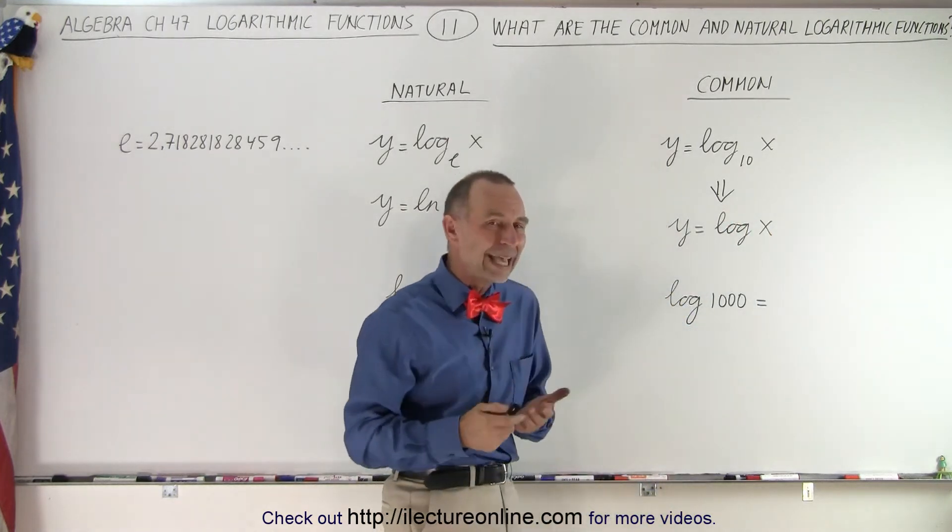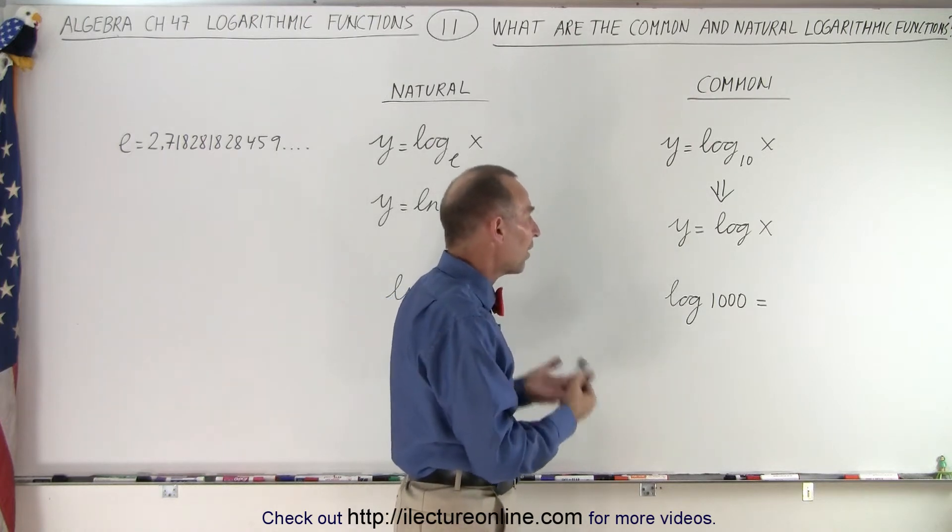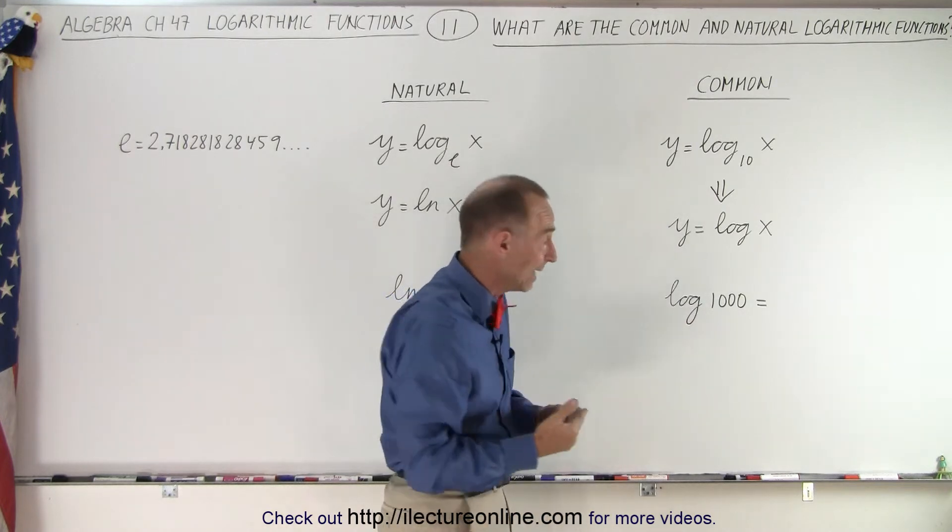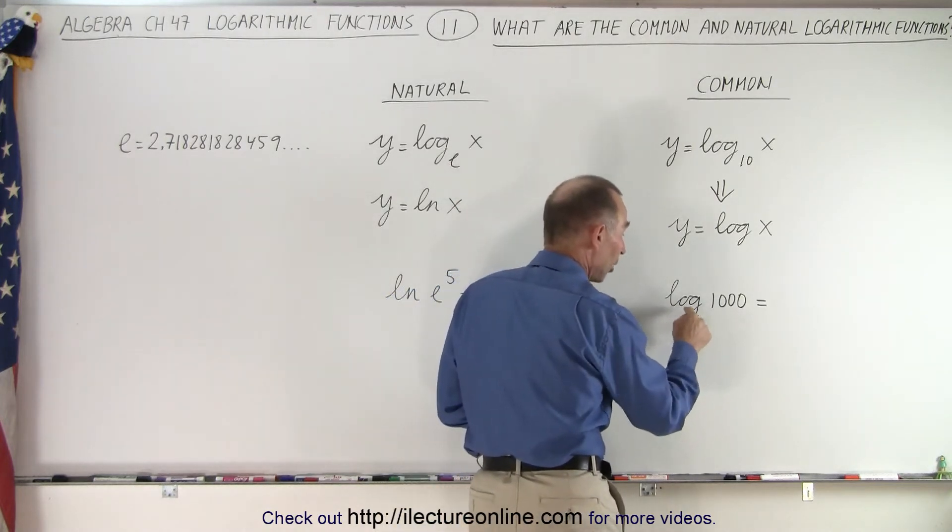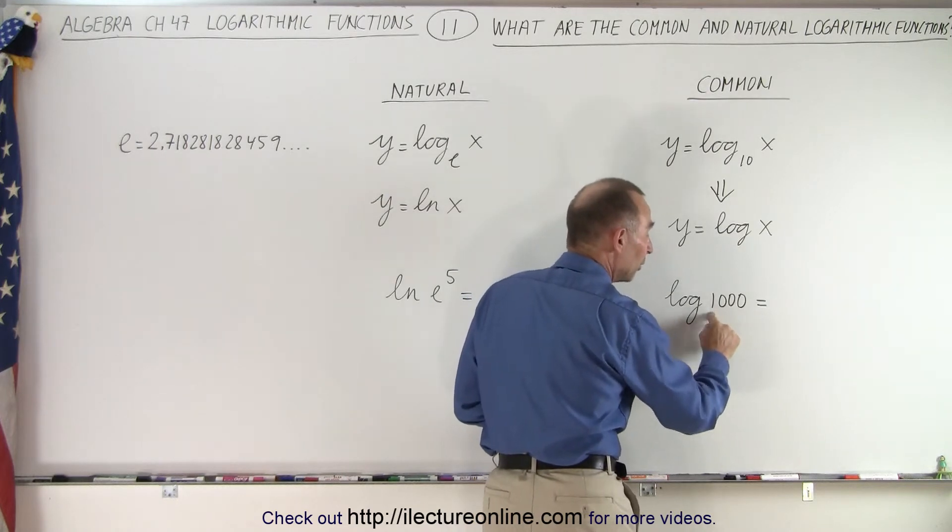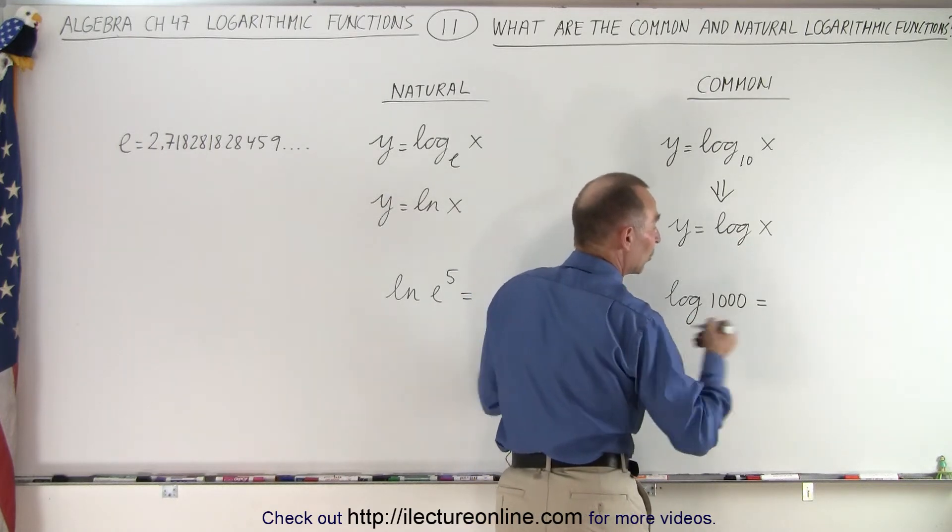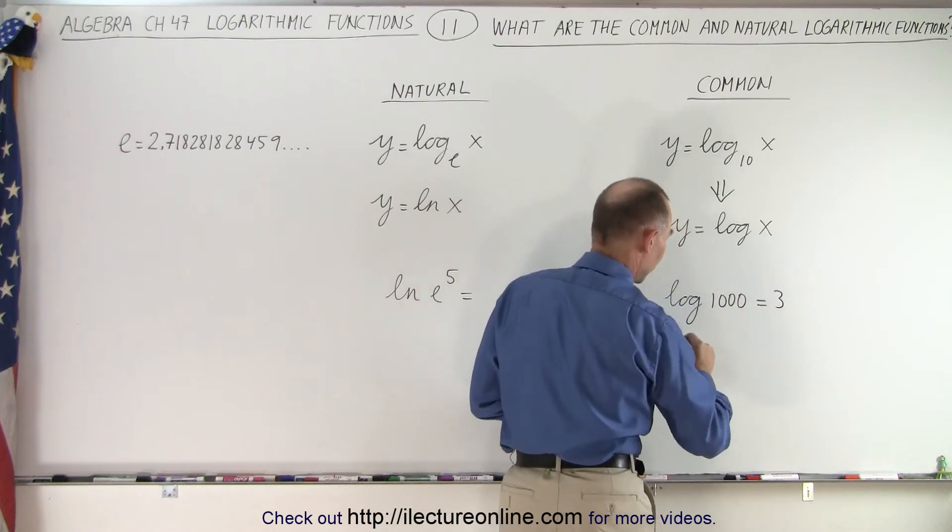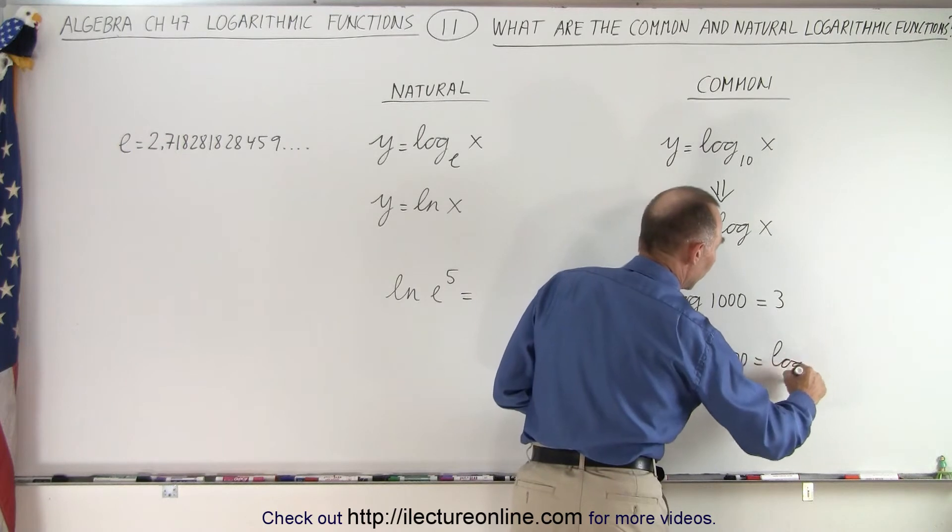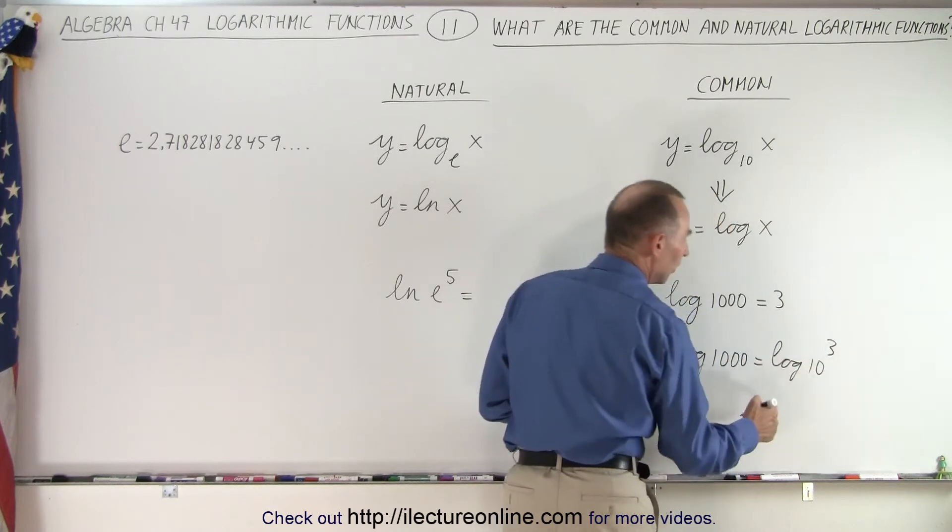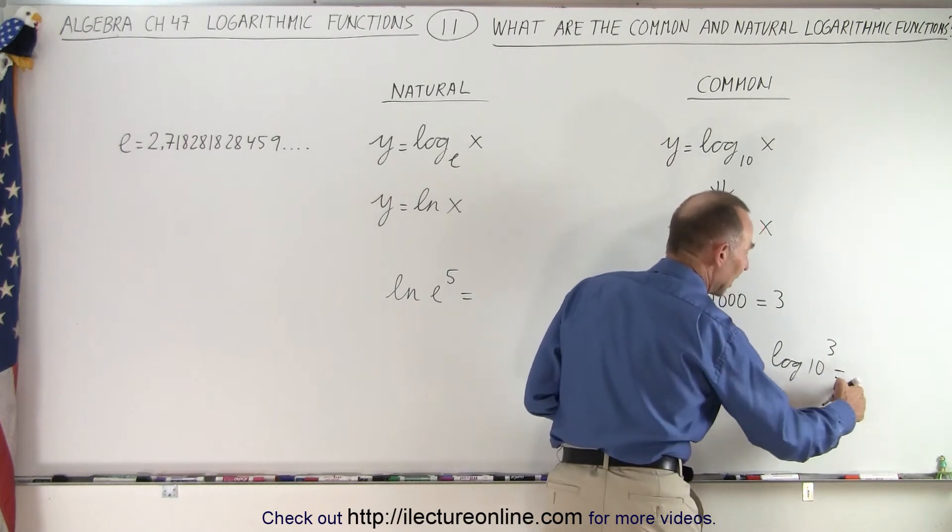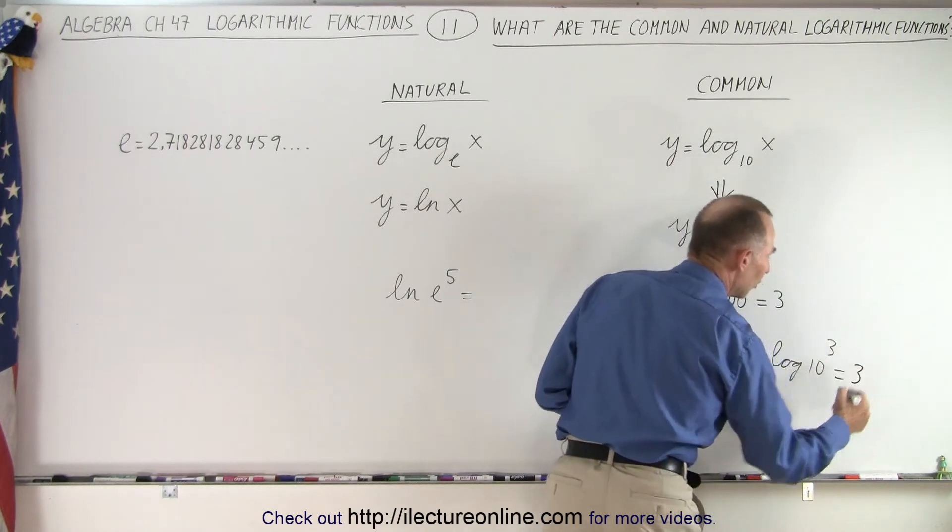So how do we take the log of a thousand? Remember, if we don't see the base number, we assume it's the base 10. And the answer is, when it's log to the base 10, we take the log of a thousand, a one with three zeros, the answer to that will be simply the number of zeros. Because the log of a thousand is equal to the log of 10 to the third power, which means that the base is the same as the base here, which means the answer to that is simply the exponent, the number three.